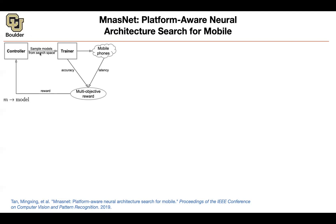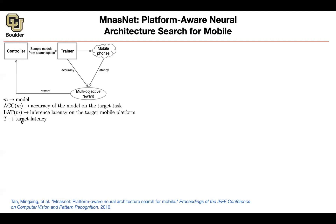You have a model you just sampled from your controller. We can measure the accuracy on some validation data. We can take your model, put it on your mobile device, and measure how many images you are actually processing on your mobile platform. That's going to give you your latency. Let's say you have a target latency — you don't want to go beyond that latency because then your application is going to end up being too slow, or your mobile phone is not going to be able to process that.